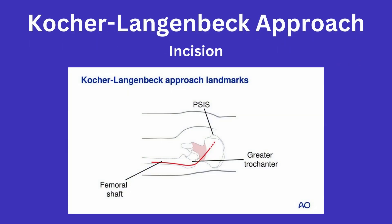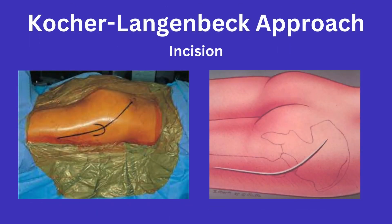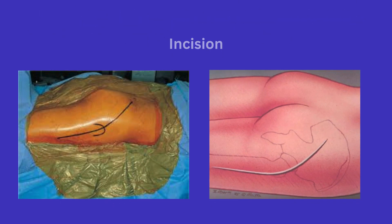Incision. Landmarks that are palpated in this approach are the PSIS or posterior superior iliac spine, the tip of the greater trochanter, and the femoral shaft. The typical incision starts distal and lateral to the PSIS, going towards the tip of the greater troch, and then following the femoral shaft down.